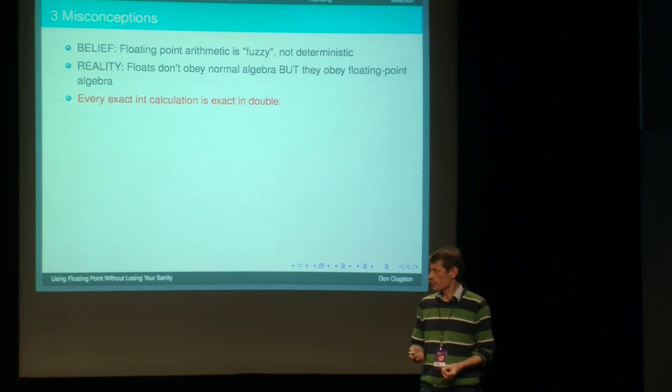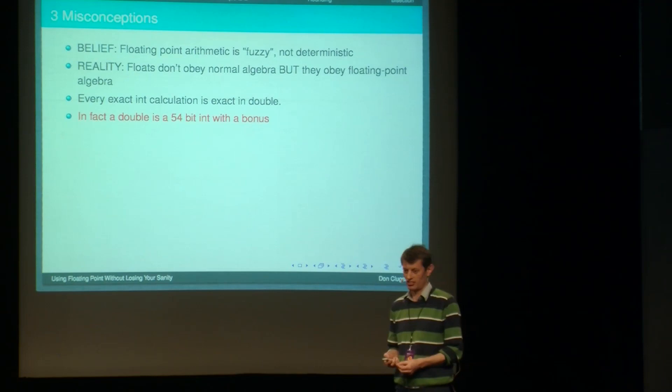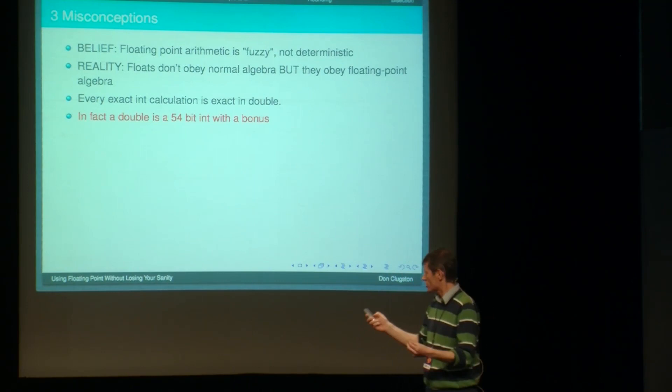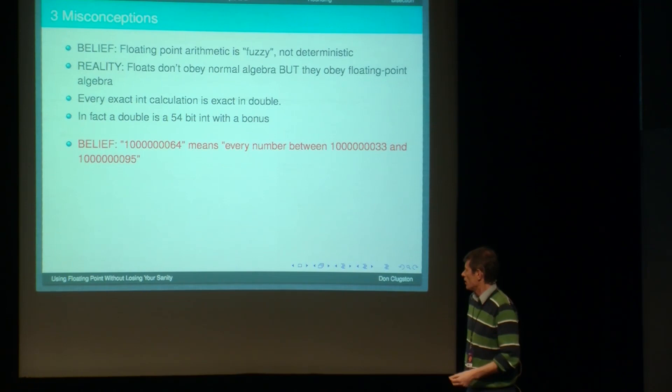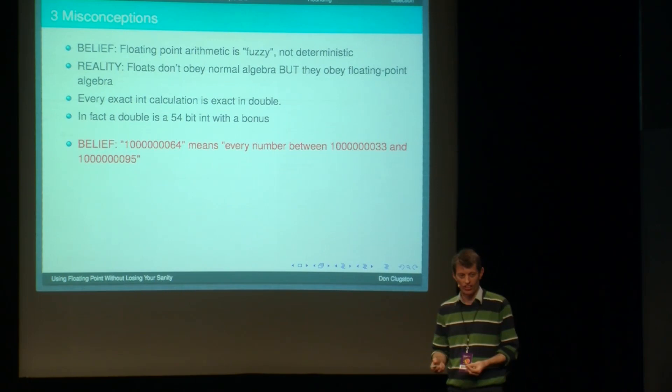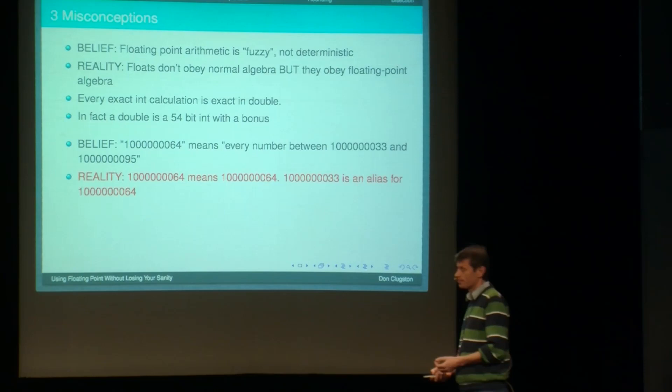One of the popular misconceptions about floating point is that somehow it's fuzzy. Somehow it's not deterministic. And you can understand that because we saw that pretty bizarre billion and 35 turning into 64. But actually, though floats don't obey normal algebra, they do obey their own algebra. Floating point algebra. And that has some interesting properties. And one of them is that if you do a calculation using ints and do that using doubles instead, it actually gives you the same result. If the integer calculation was exact, so is the floating point calculation. It's not actually worse. As long as it doesn't overflow, you're fine. In fact, what a double is, it's a 54-bit integer with a bonus. If you go outside its range, it still gives you an answer. If you divide, you get a fractional part. But still, it's got everything an int can do plus more.